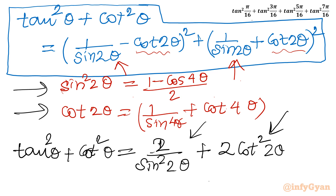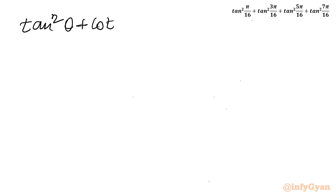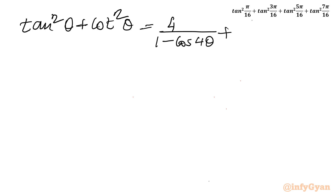So I will write the overall formula: tan²θ + cot²θ = 4/(1 − cos(4θ)) + 2·[1/sin(4θ) + cot(4θ)]².